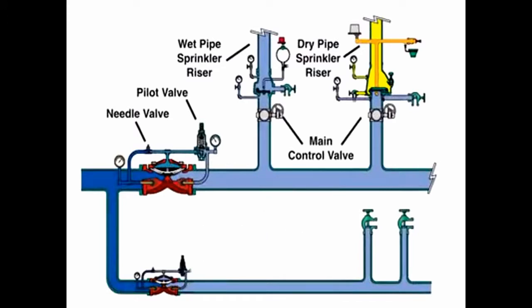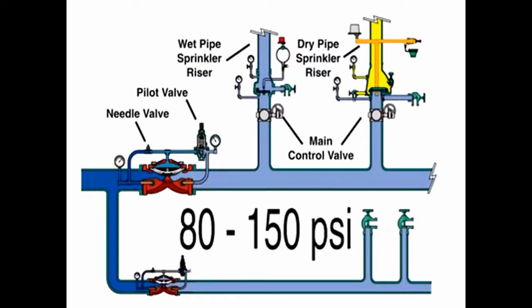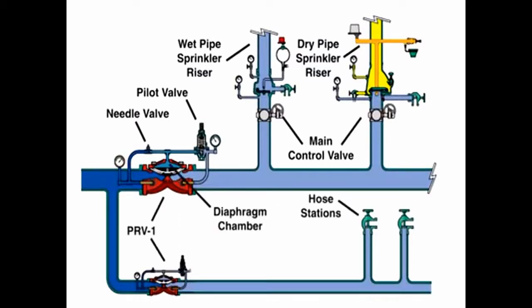However, it may be field set to a pressure within the range of 80 to 150 PSI. This is referred to as the PRV1 set pressure value.